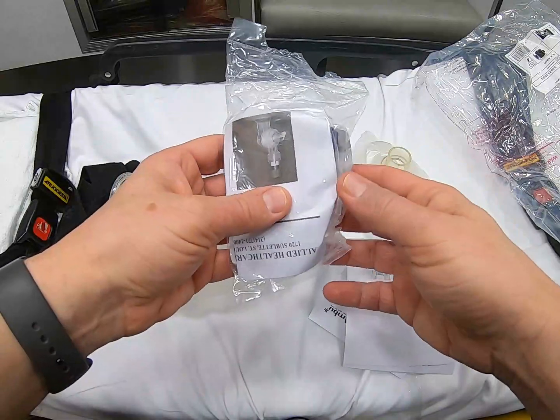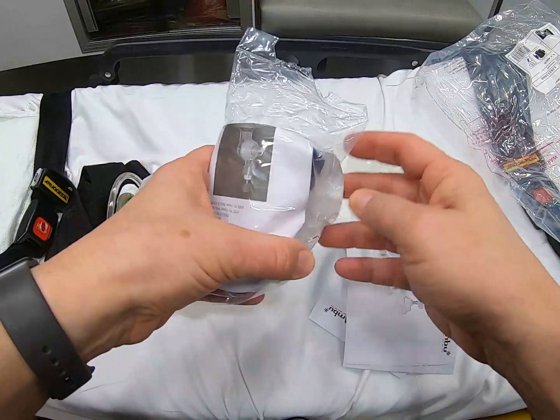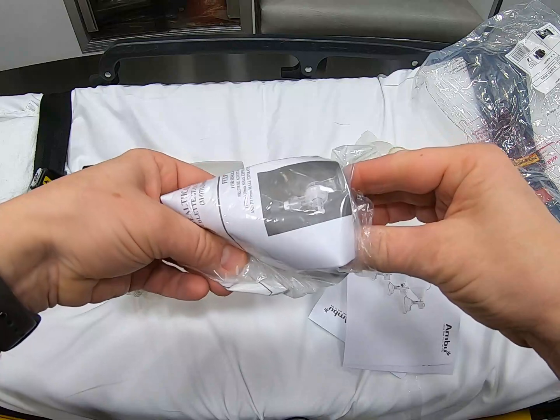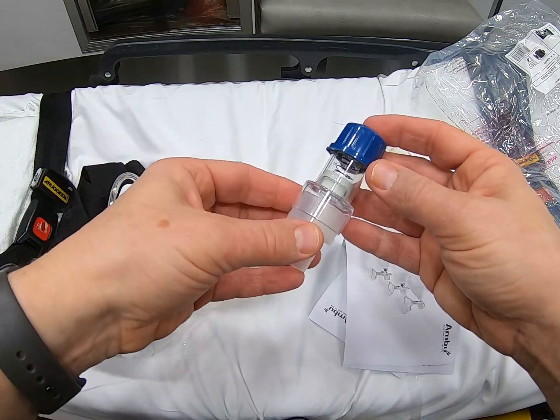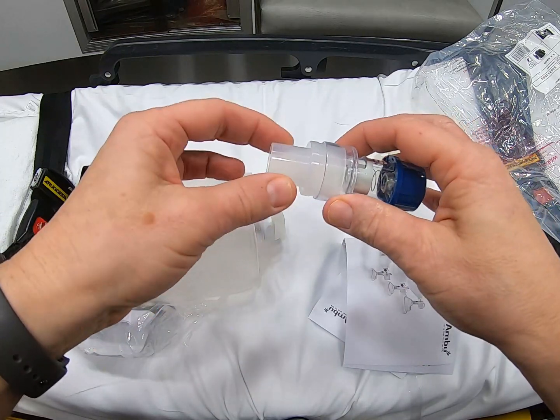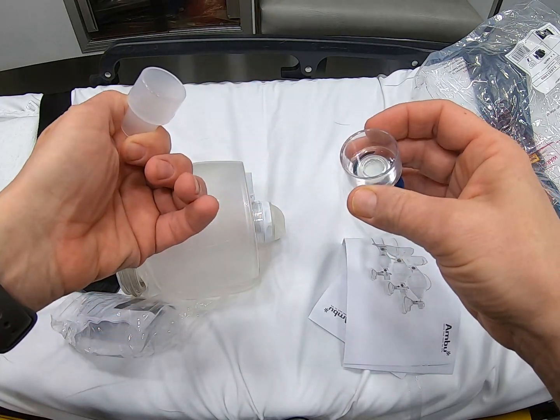The PEEP valve is going to be in a bag that looks like this. When you open up the PEEP valve, it comes out in a container like this. This portion here comes off and is disconnected.